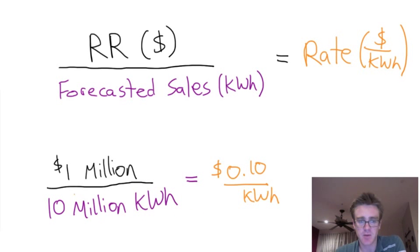So, during this company's rate case, the commission determines that they have this revenue requirement of one million dollars. They forecast out that they're going to sell 10 million kilowatt hours of electricity and come up with a rate fixed during the rate case of 10 cents per kilowatt hour.